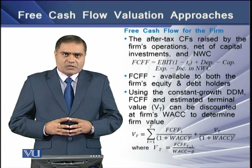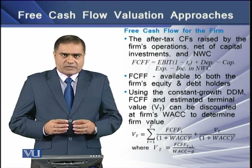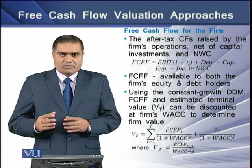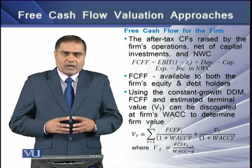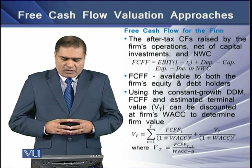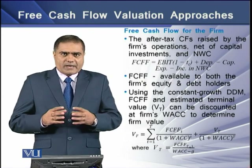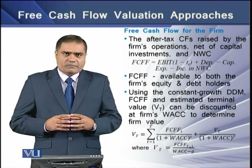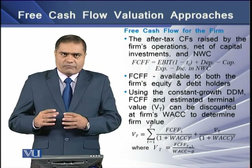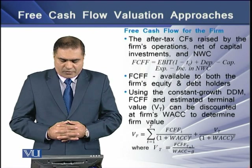Using the constant growth dividend discount model, the FCFF and the terminal value of the firm can be discounted to determine the firm value. The discounting is done at the company's WACC — the weighted average cost of capital.